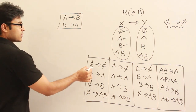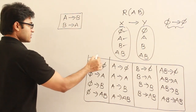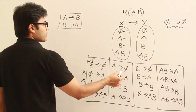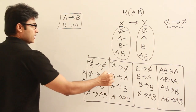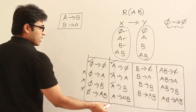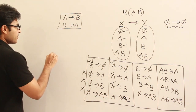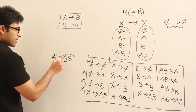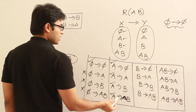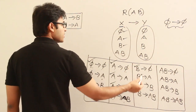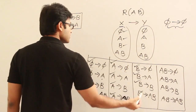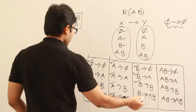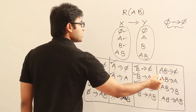Testing each FD against {A→B, B→A}: phi→phi is trivially possible. phi→A is not possible. A→phi is trivial. A→B is already given, so true. A→AB: find A⁺ — starting with A, because of A→B we get B, so A⁺ = {A,B}, which means A can determine AB — true. B→phi trivial, B→A already given, B→B trivial. B→AB: find B⁺ — B plus B→A gives A, so B⁺ = {A,B}, so B→AB is true.